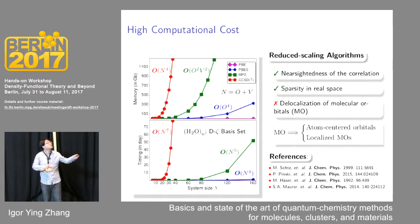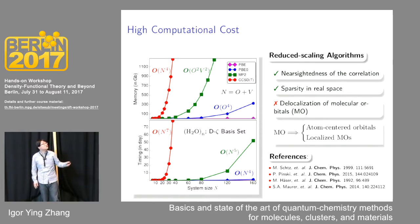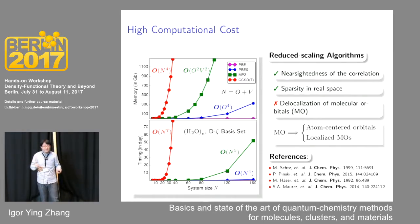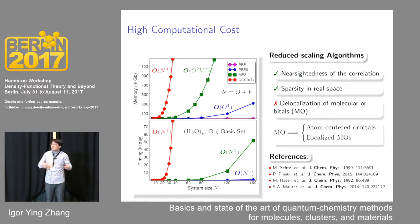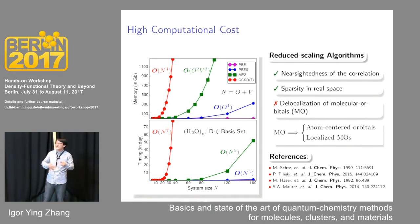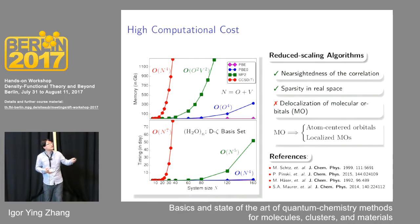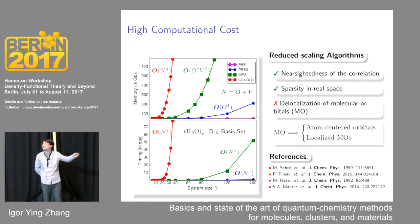The near-sightedness concept cannot be used straightforwardly because canonical MP2 and CCSD(T) are represented using delocalized molecular orbitals. Two popular approaches are to use sophisticated mathematical transformations to rewrite the MP2 or CCSD(T) formulation in an atom-centered orbital representation or a localized molecular orbital representation. If you are interested in this topic, you can start reading from the references shown here.